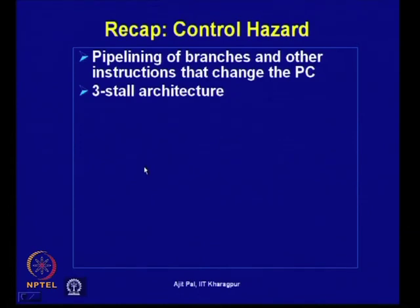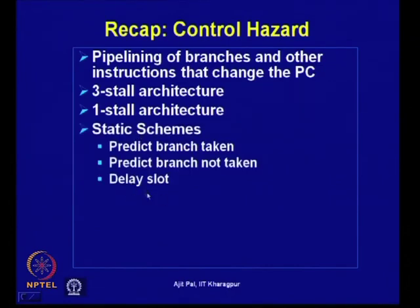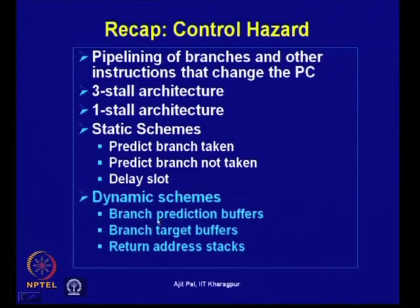In the last lecture we discussed three-stall architecture and how it can be improved to one-stall architecture. We discussed various static schemes: predict branch taken, predict branch not taken, and how to use the delay slot effectively to reduce the penalty due to branches. Today we shall discuss dynamic schemes, where we shall be using branch prediction buffers and also branch target buffers.